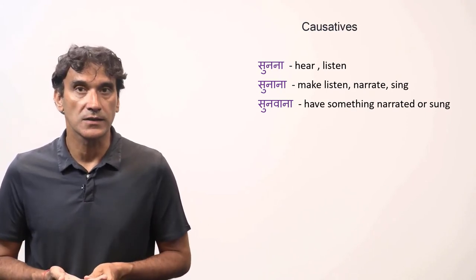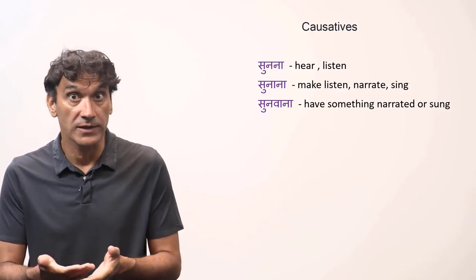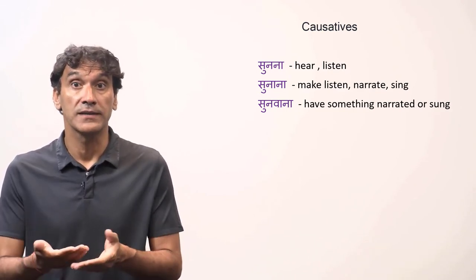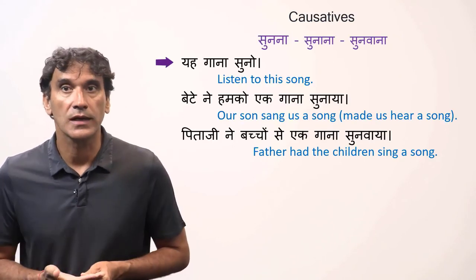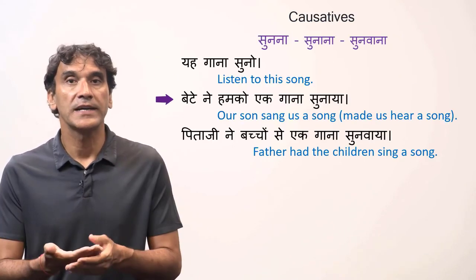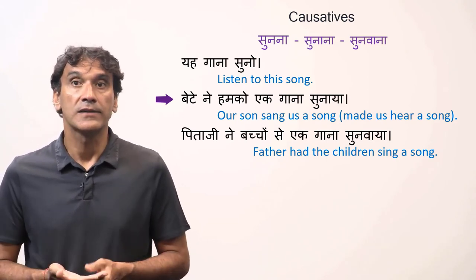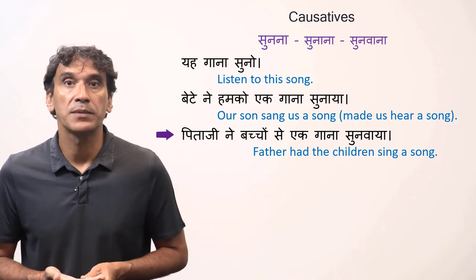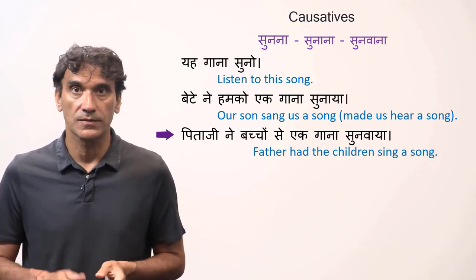The next set is sunna, sunana, and sunwana. Sunna is to hear. Sunana is to make listen, which could be to narrate or to sing. And sunwana is to have something narrated or sung. Yeh gana suno: listen to this song. Bete ne humko ek gana sunaya: our son sang us a song — literally, he made us hear a song. Pita ji ne bachon se ek gana sunwaaya: father had the children sing a song.